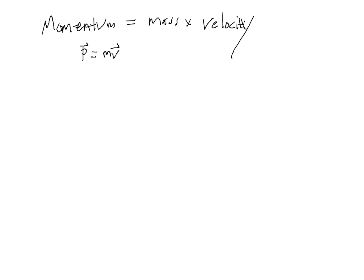So if, for example, you have a car with mass 500 kilograms traveling at 20 meters per second to the east, then the momentum of that car would be equal to 500 kilograms times 20 meters per second.